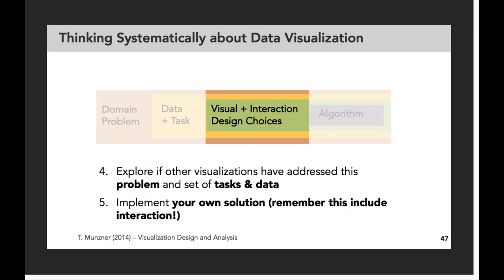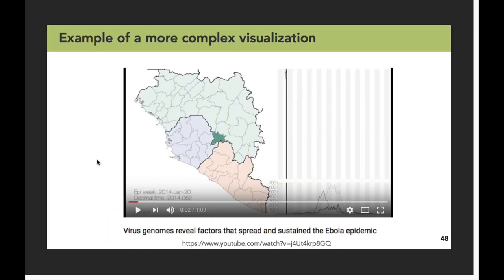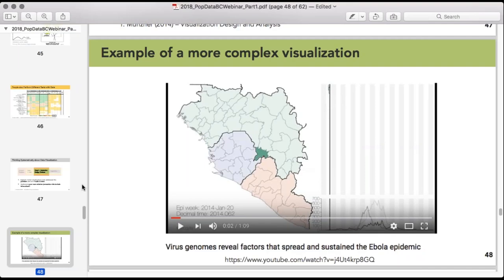Now we've talked about the domain problem and the tasks, so we finally get to actually visualizing the thing. You should explore whether other people have addressed this problem as well as the relevant tasks and data — somebody else in some research paper may have already tried to think about this and come up with something. It's useful to know what the alternatives might be as opposed to jumping to what you might think is your instinctual best answer. Then you can go ahead to actually implementing your own solution — using a tool like Tableau, R, or something more complex like JavaScript — and remember that this visualization can also include interaction. There's a wider realm of possibilities than just whatever these tools can create.